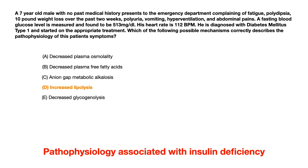This question, if not already obvious just by reading the vignette, is talking about pathophysiology associated with insulin deficiency. We can probably assume from the question stem that this patient with no past medical history is now diagnosed with type 1 diabetes and is presumably in diabetic ketoacidosis. The question is asking you to understand and infer the different pathophysiology that occurs in states of insulin deficiency, and this is really high yield for USMLE and COMLEX.